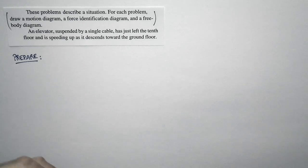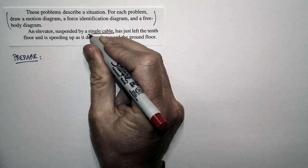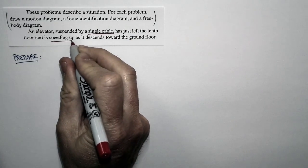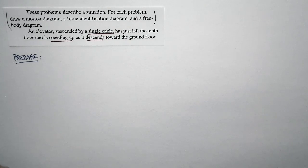Okay, so let's look at the crucial pieces. The elevator is suspended by a single cable - that's going to be an important thing. And it's just left the 10th floor. It's speeding up as it's descending toward the ground floor. So let's start by drawing a motion diagram of this situation.